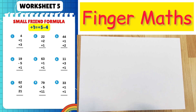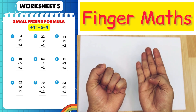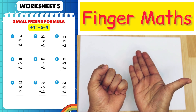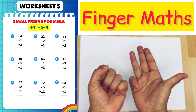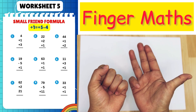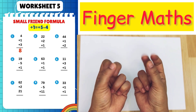First question: 4 plus 1, plus 5 minus 4, plus 3. Answer is 8.